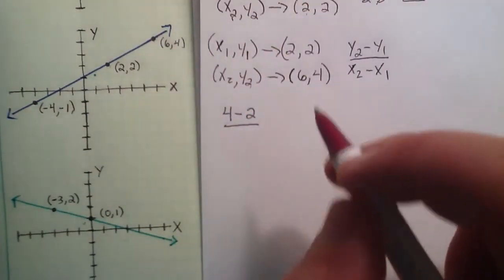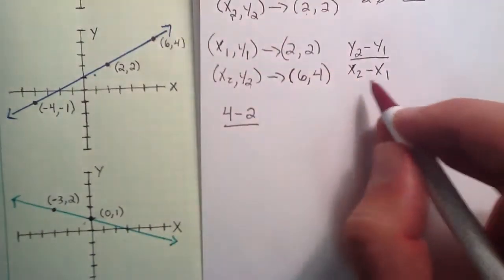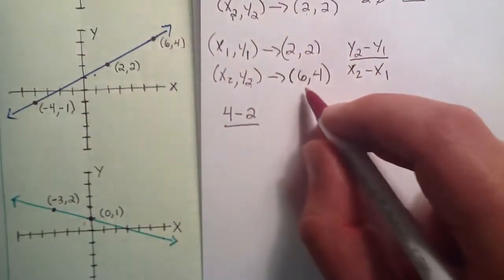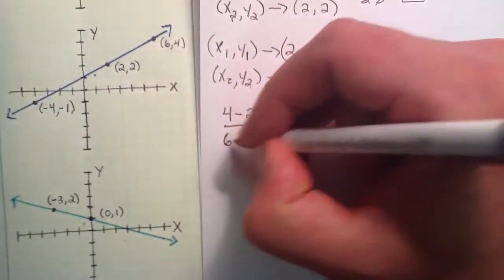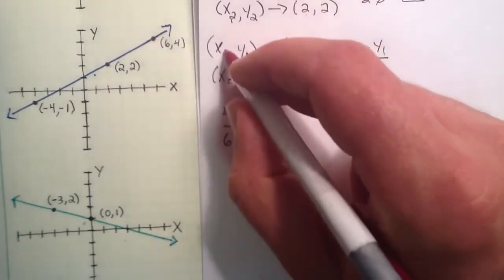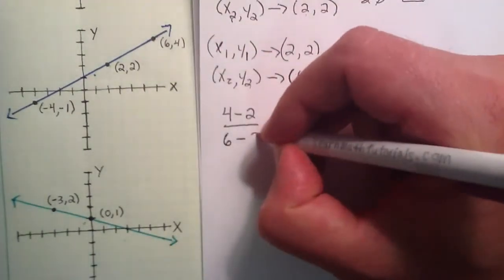And then we divide by x2 minus x1. So x2 is the left hand side of this point, or the 6. And we're subtracting the x1, the left hand side of this point, or 2.